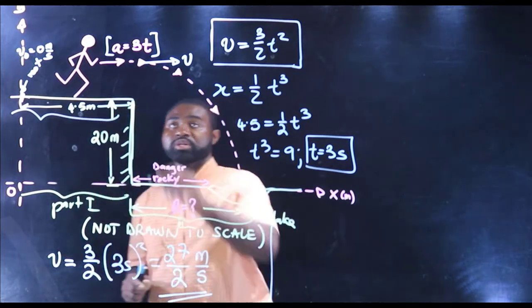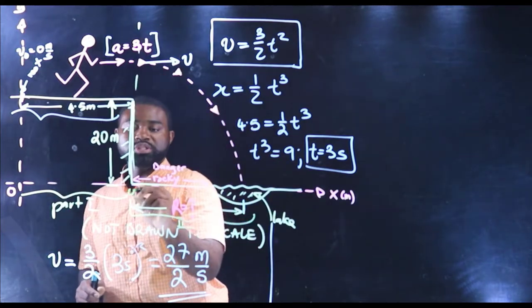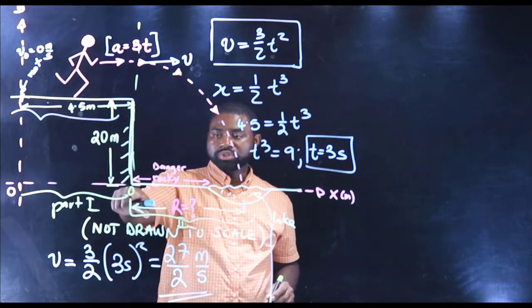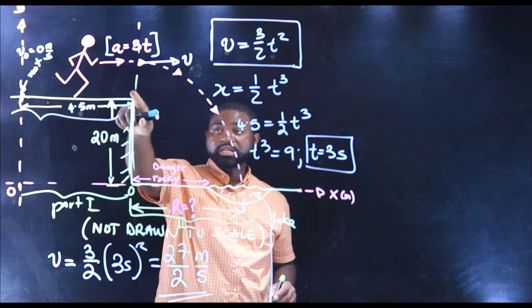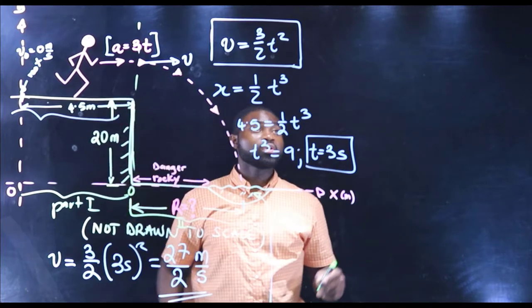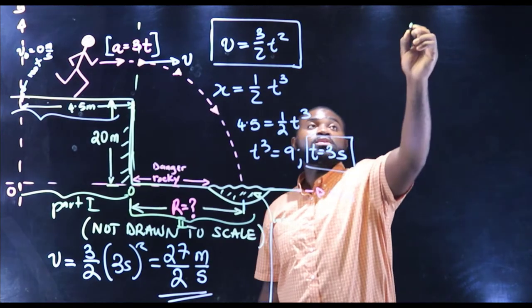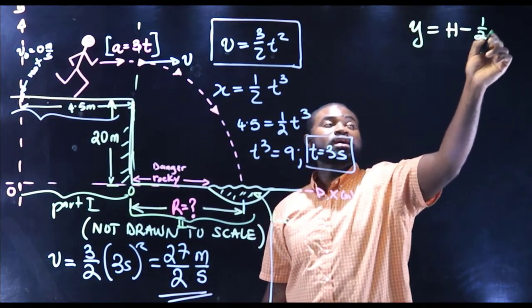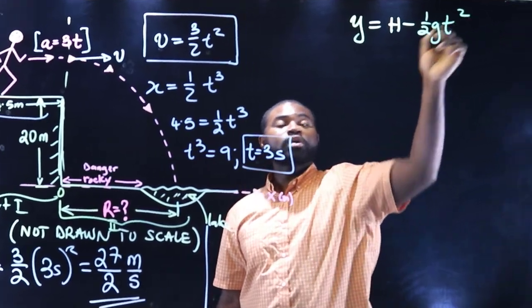Now for part two, we are going to assume that our origin is right there. If we take our origin to be at this point, it means that initially Tom is at a certain height h above the ground. We naturally know that y is equal to h minus one-half g t squared.